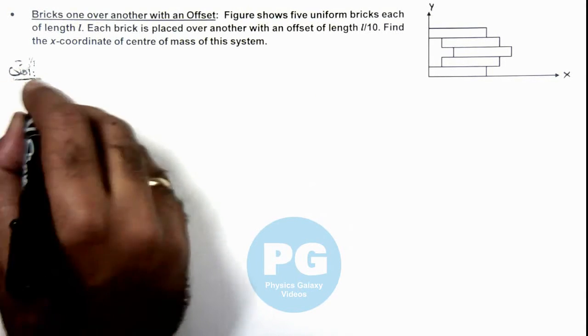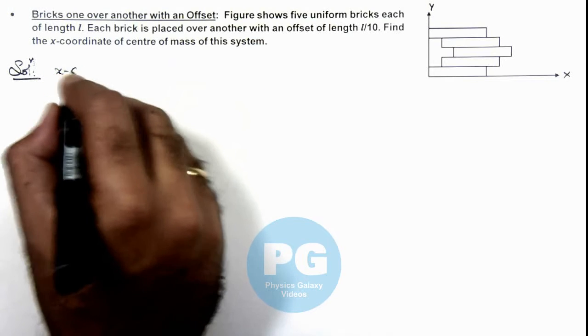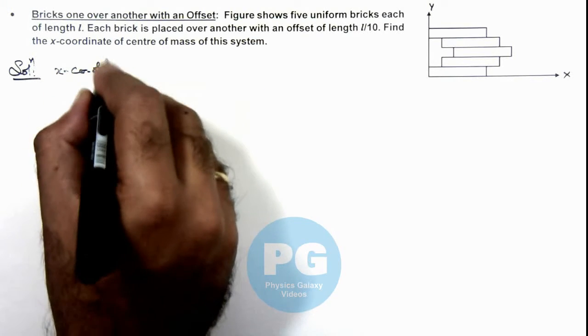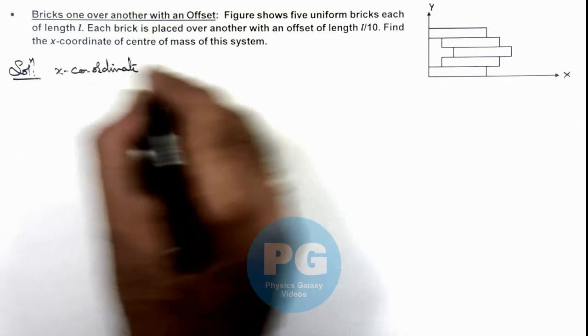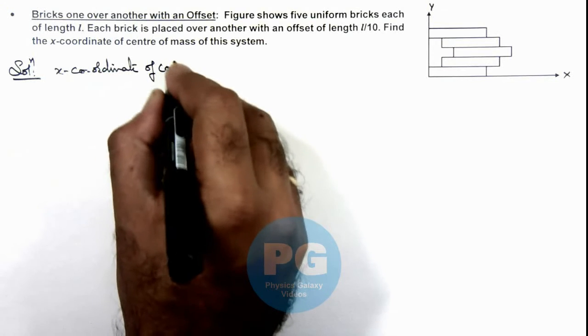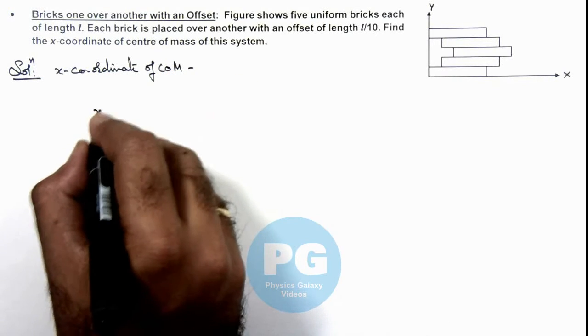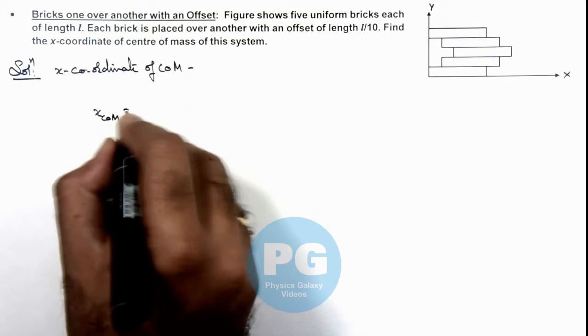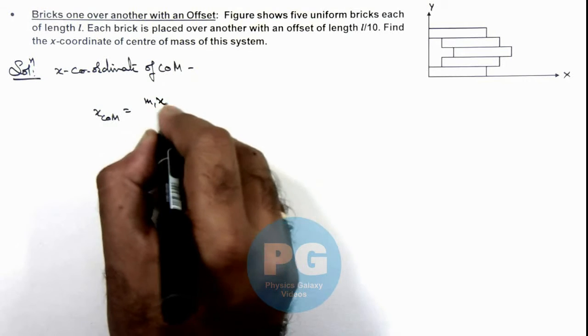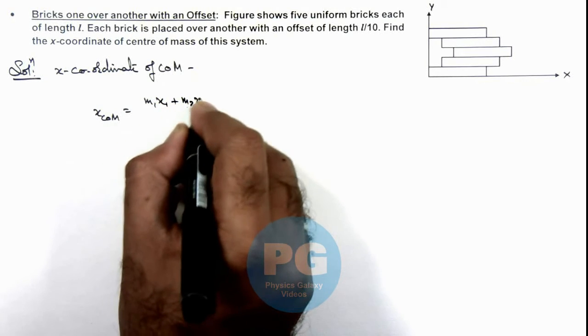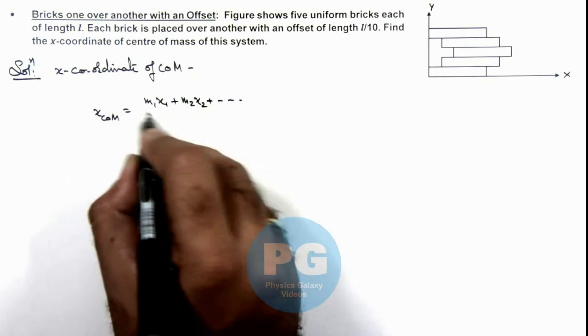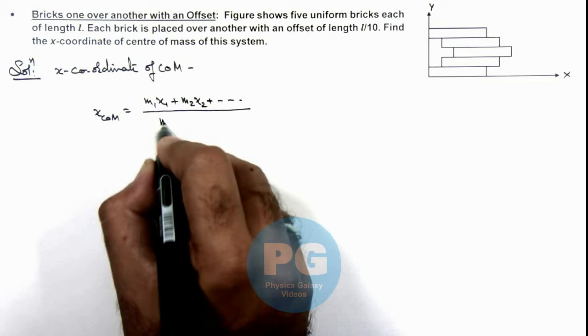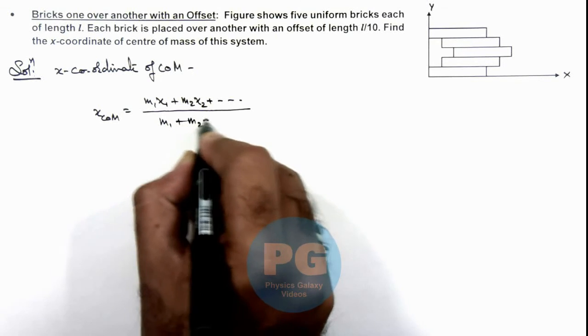So in all such cases we can write: x-coordinate of center of mass of any system can be given by x_cm equals m1 x1 plus m2 x2 plus and so on for all bodies, divided by m1 plus m2 plus and so on.